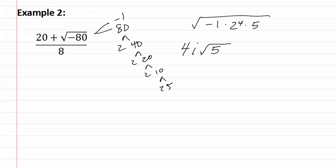As you've noticed, the i we treat just like a variable, and it goes after the numbers. Let's place this into the problem. We have twenty plus four i root five over eight.